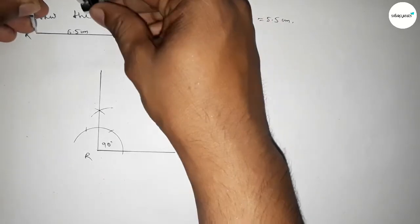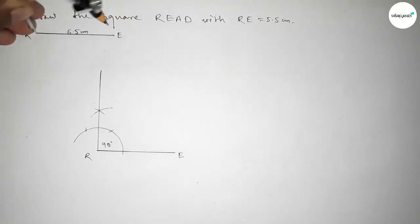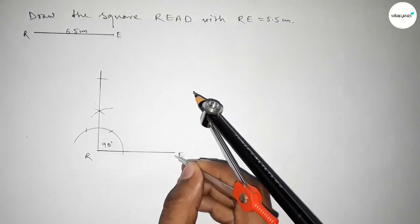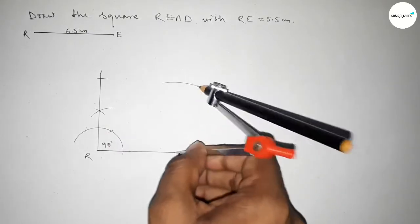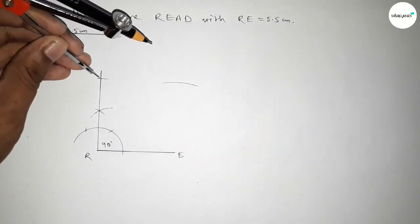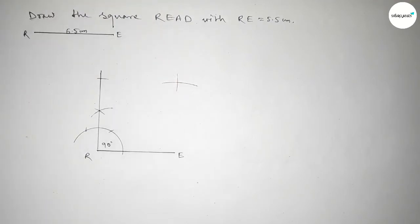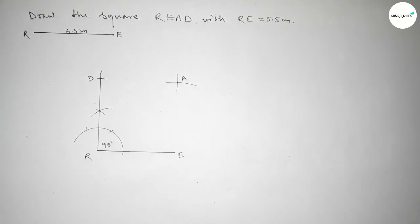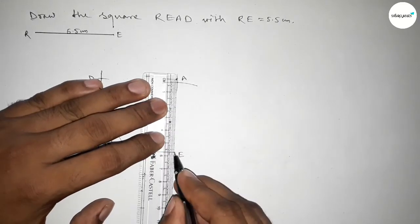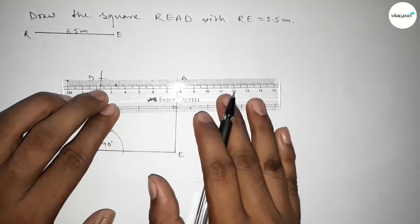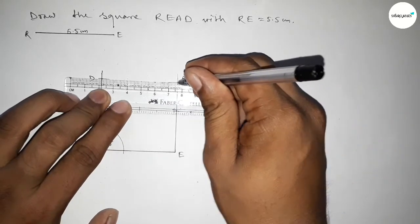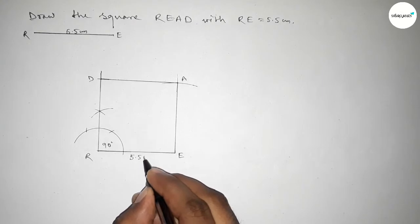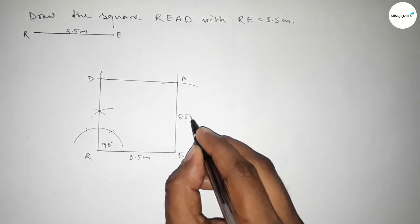Taking the length 5.5 centimeters using the compass and putting the compass here and cutting with the same length. Putting the compass here and drawing an arc, then cutting here so both curves intersect at a point — marking point D and point A. First joining this line, then joining this line. This side is 5.5 centimeters.